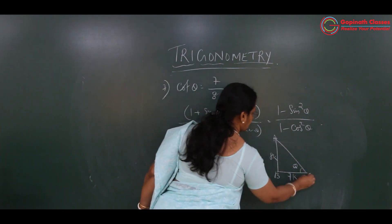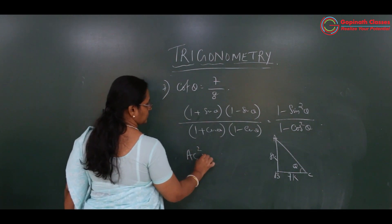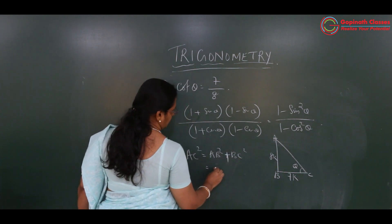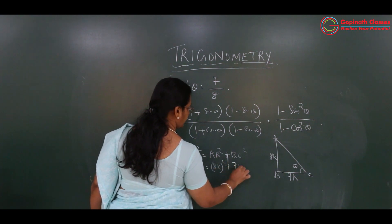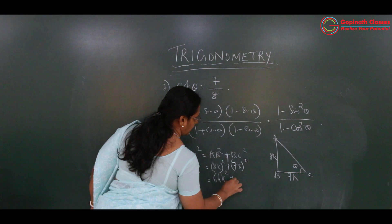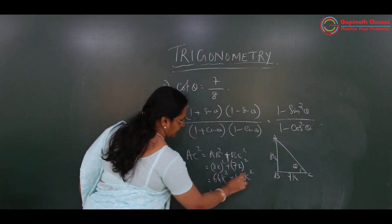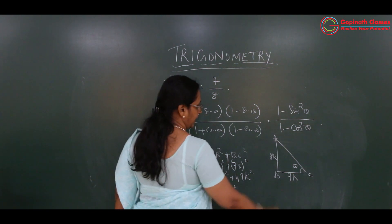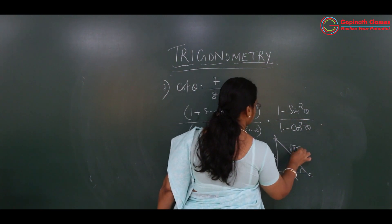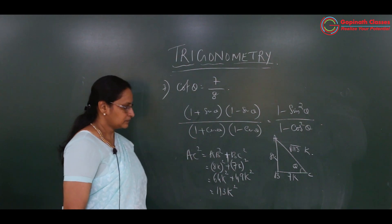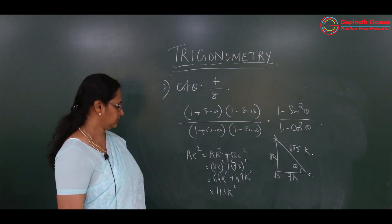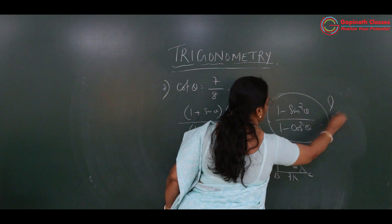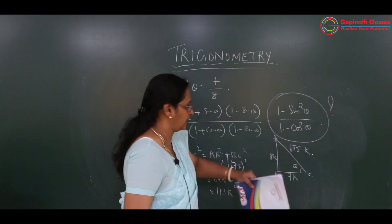Cot is nothing but adjacent upon opposite, so adjacent is 7k and opposite is 8k. Let me name this triangle ABC and find AC square: AC square equals AB square plus BC square, which is 8k square plus 7k square — 64k square plus 49k square — making 113k square. Thus AC is root 113 times k. It is not a perfect square. Now we have all three sides.